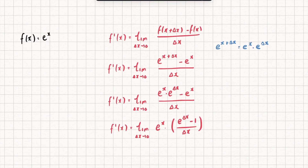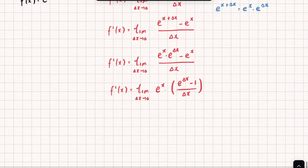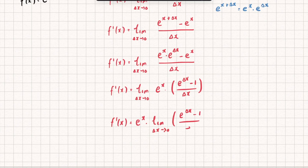Now — and this is something you may not be too familiar with at A-level — when calculating a limit, since eˣ doesn't depend on delta x, it's independent of the limit and can be pulled out to the front. So we can write: f′(x) equals eˣ multiplied by the limit, as delta x tends to 0, of (e to the delta x minus 1) over delta x.